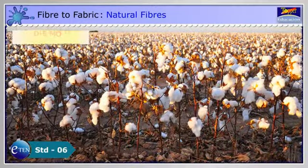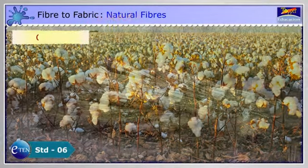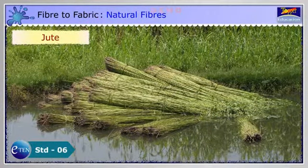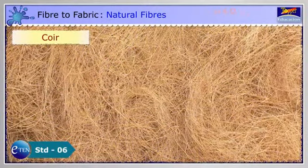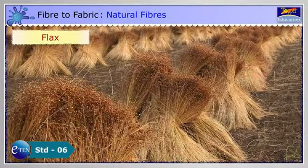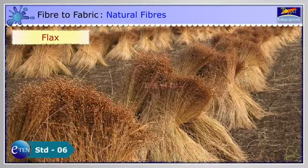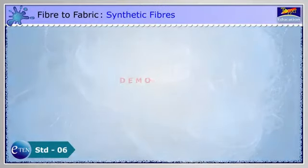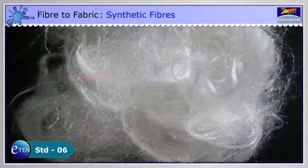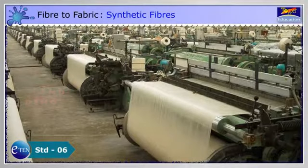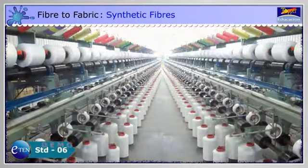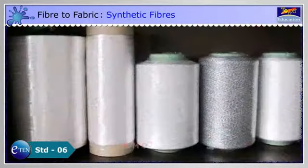Fibres like cotton, jute, coir and flax are natural fibres that are made from plants. Fibres synthesized in industries from simple chemicals obtained from petroleum are called synthetic fibres.